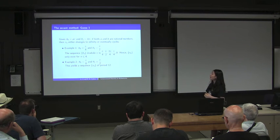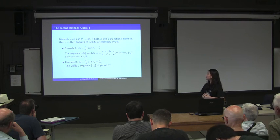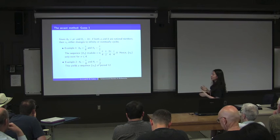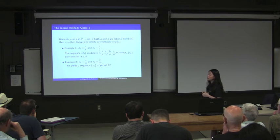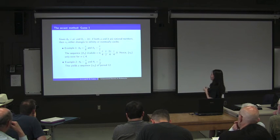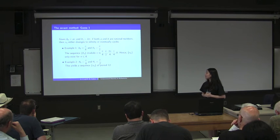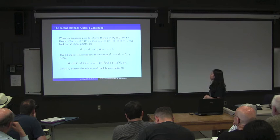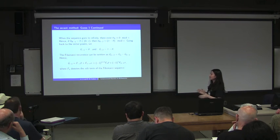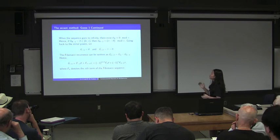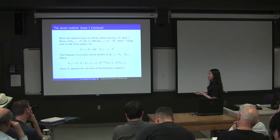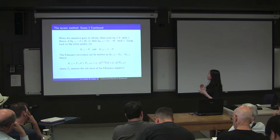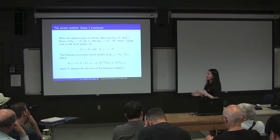For the first example with θ₀ equals π over 4 and θ₁ equals π over 2, looking at the sequence of angles modulo π, we find θ₄ equals 1, meaning x₄ is infinity — so the iteration blows up. For the second example with θ₀ equals π over 8 and θ₁ equals π over 2, this gives a period-12 sequence. To distinguish these two patterns: when the sequence goes to infinity, there must exist one angle congruent to 0 modulo π; setting the angle before that as θ, the preceding angle is π minus θ modulo π.